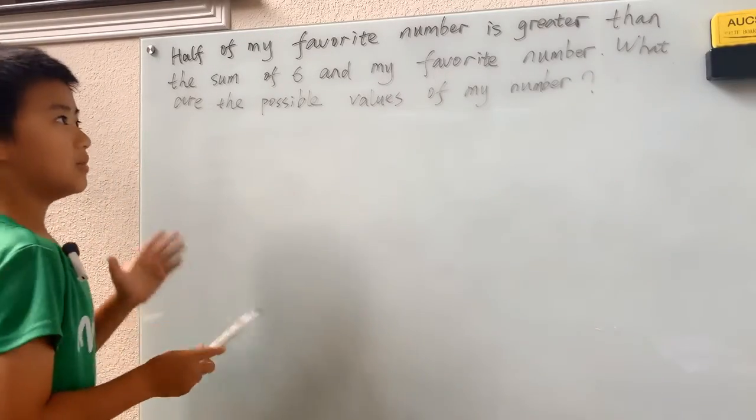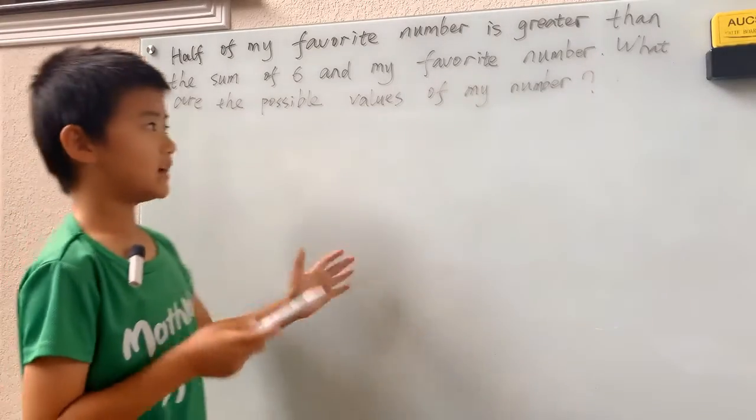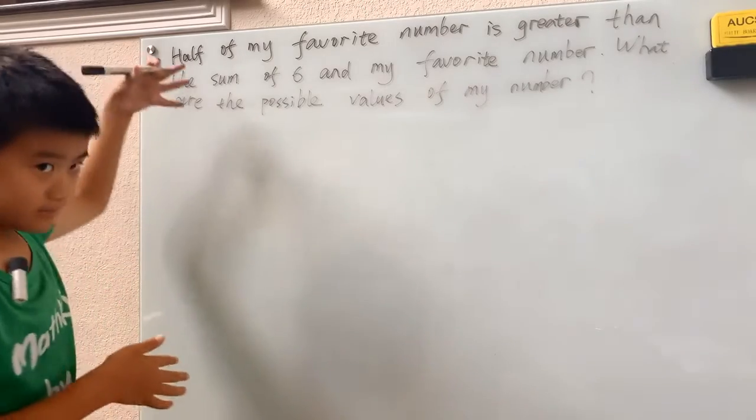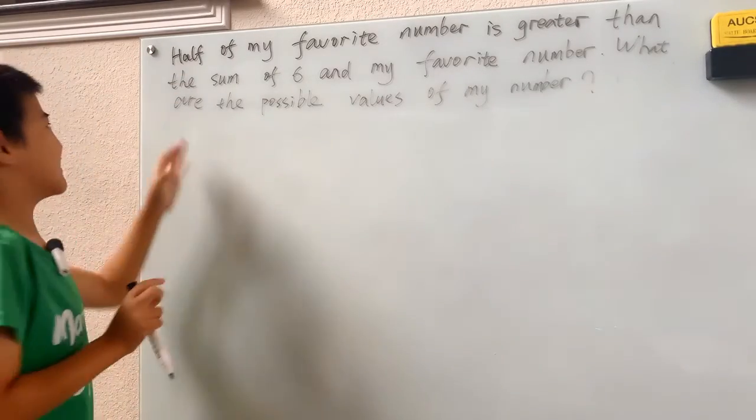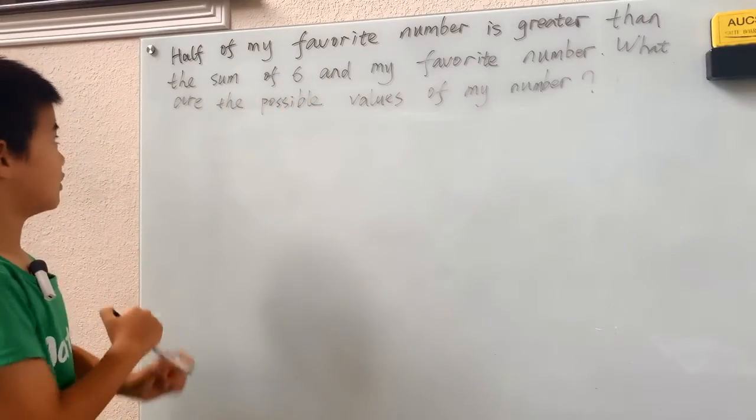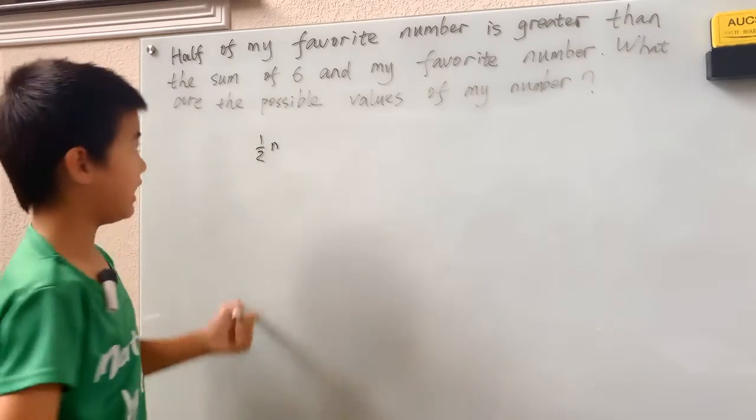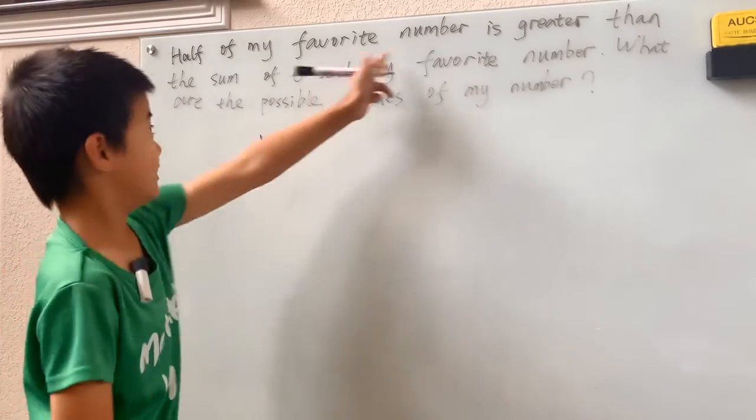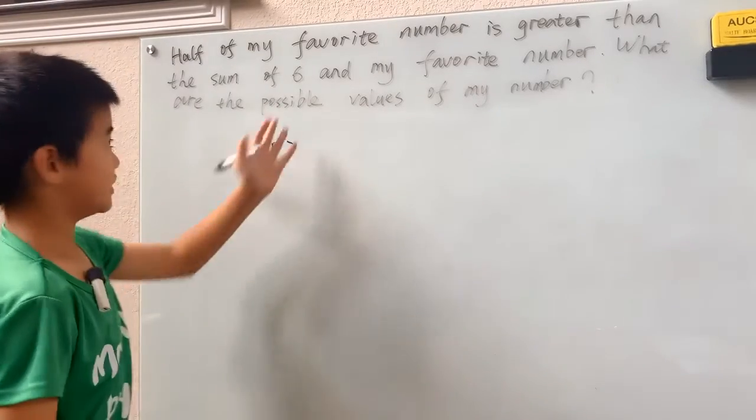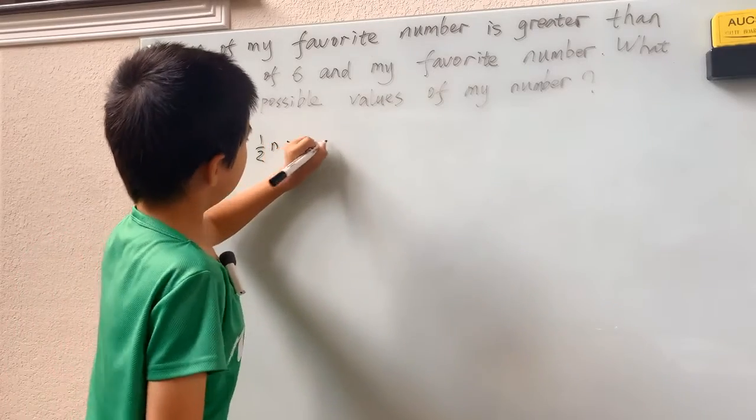Half of my favorite number is greater than the sum of six and my favorite number. What are the possible values of my number? Now of course, making an inequality, half of my favorite number is greater than the sum of six and my favorite number. Well, say your favorite number is n, then just take half of that number. Now if this is greater than the sum of six and my favorite number, that's just six plus n.